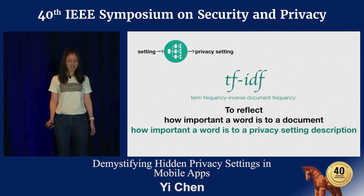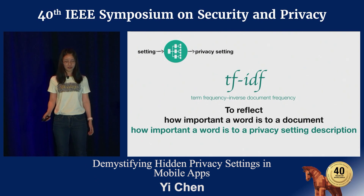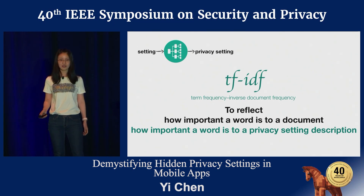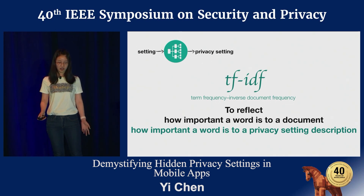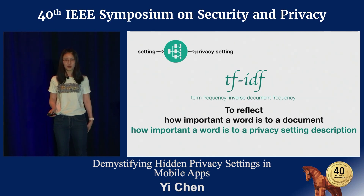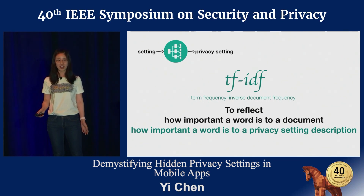For the first classifier, we use TF-IDF of each word in a setting's text description to design the features. TF-IDF reflects how important a word is to a document; in our work, we use it to reflect how important a word is to a privacy setting description. We model each setting text description with a high-dimensional feature vector where each dimension represents a word in a vocabulary. If a word appears in the sentence, the corresponding dimension's value is its TF-IDF score; otherwise the dimension's value is zero.